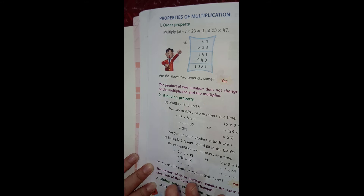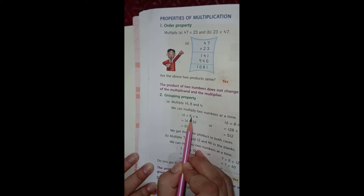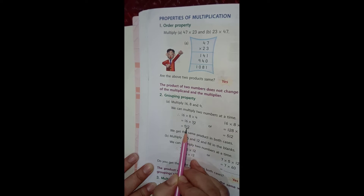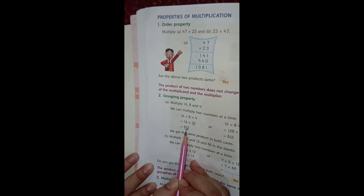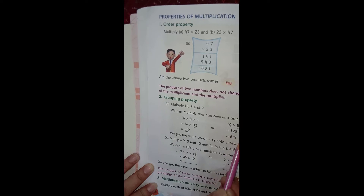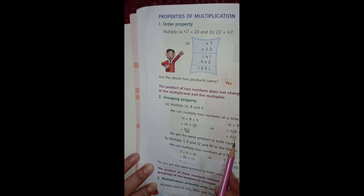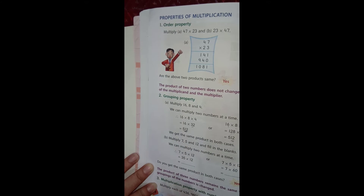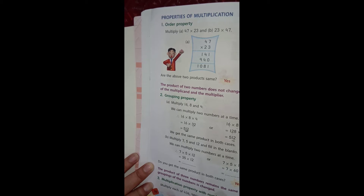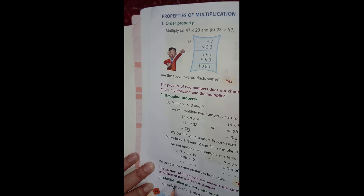The second property is the grouping property. This property says that the product of three numbers remains the same when the grouping of the numbers is changed. For example, with 16 into 8 into 4 — if we keep 16 as it is and multiply 8 and 4 we get 32, or if we multiply 16 and 8 first and keep 4 as it is, the answer remains the same.